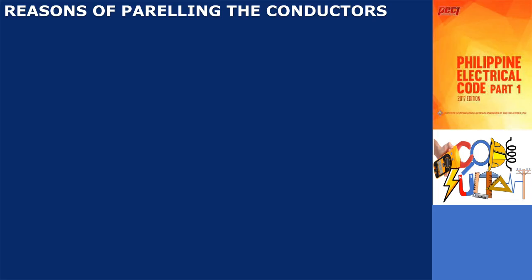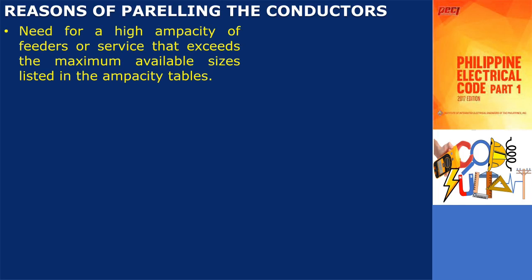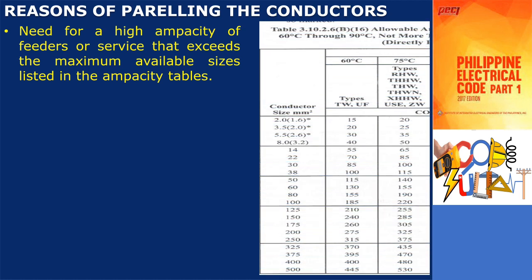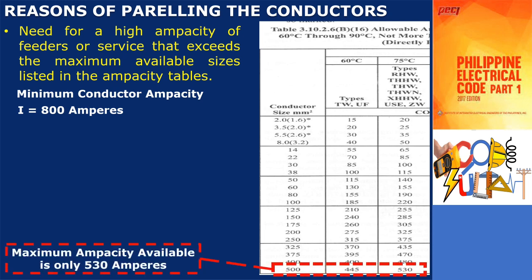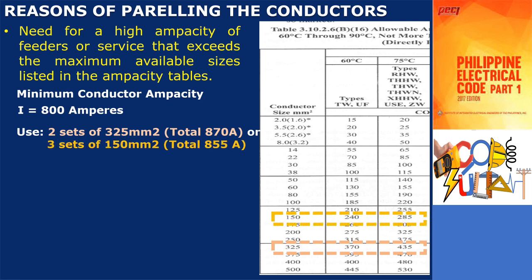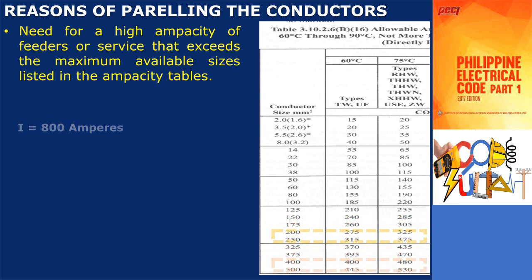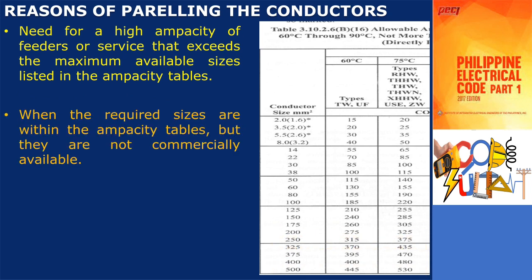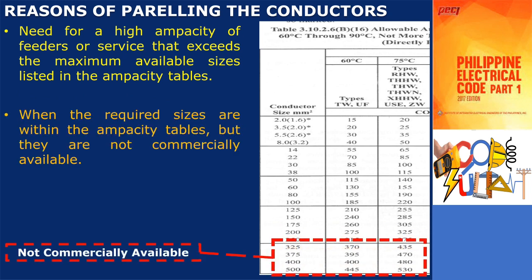There are several reasons for paralleling conductors in electrical installations. One of the main reasons is when there is a need for a high ampacity of feeders or service that exceeds the maximum available sizes listed in the ampacity tables. In such cases, paralleling multiple conductors allows for the combined ampacity to meet the required capacity. Another reason for paralleling conductors is when the required sizes are within the ampacity tables but are not commercially available. By paralleling smaller conductors, the desired ampacity can be achieved effectively.